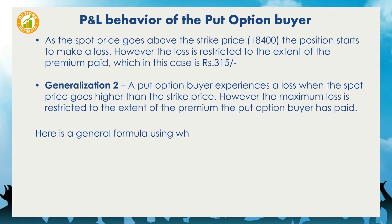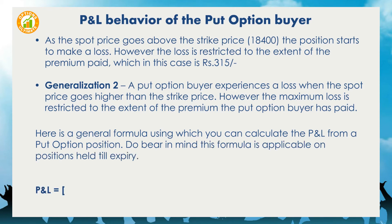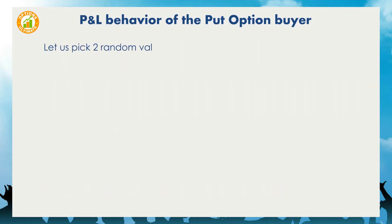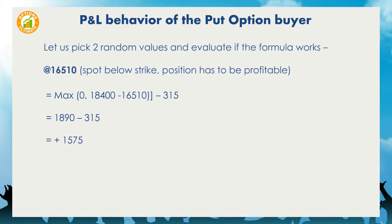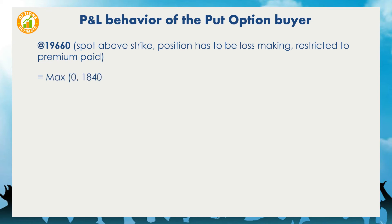Here is a general formula to calculate the P&L from a put option position — applicable on positions held till expiry: P&L = Max(0, strike price minus spot price) minus premium paid. Let us verify with two values. At 16,510 (spot below strike, position should be profitable): Max(0, 18,400 − 16,510) − 315 = 1,890 − 315 = +1,575. At 19,660 (spot above strike, position should be a loss restricted to premium): Max(0, 18,400 − 19,660) − 315 = Max(0, −1,260) − 315 = −315. Both results match the expected outcomes.